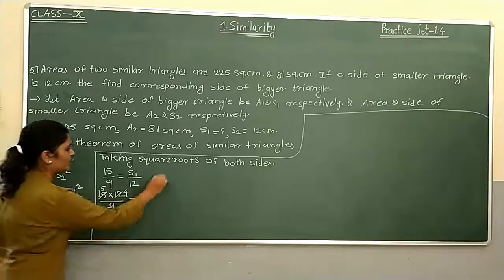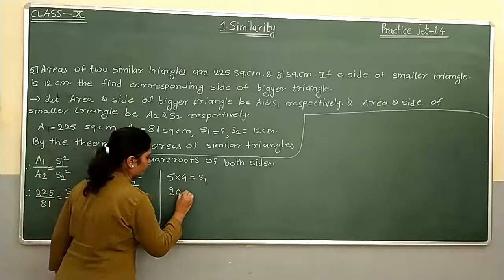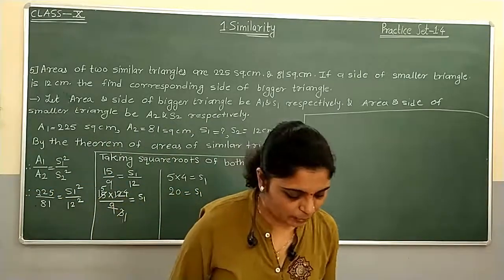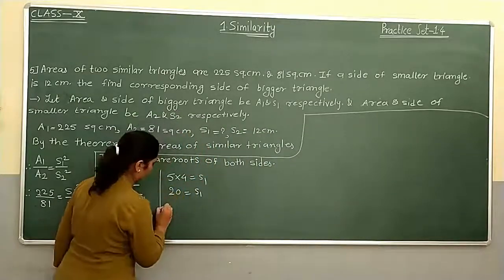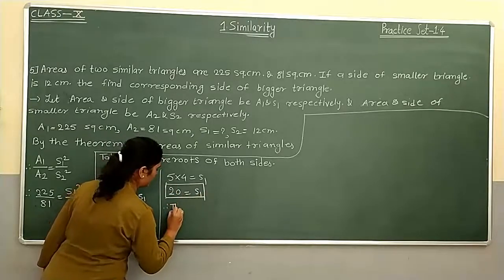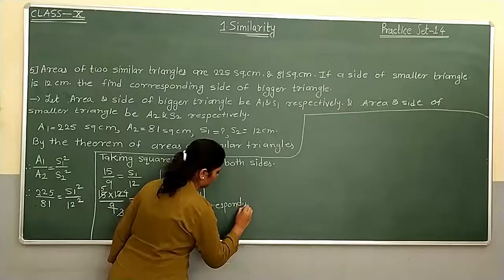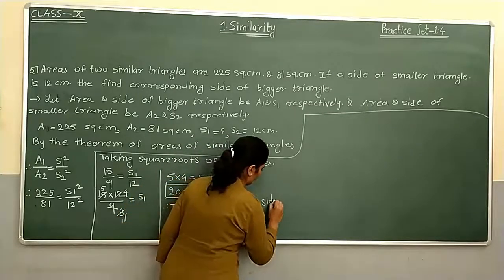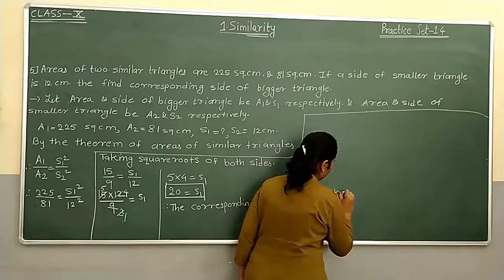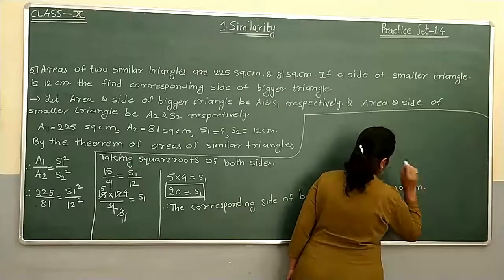Simplifying: 9 and 12 share a factor of 3, and 9 and 15 share a factor of 3. So we get 5 into 4, which equals 20. Therefore S1 equals 20. The corresponding side of the bigger triangle is 20 cm.